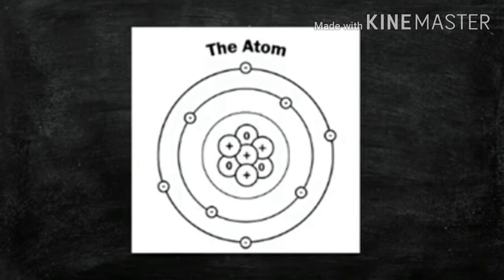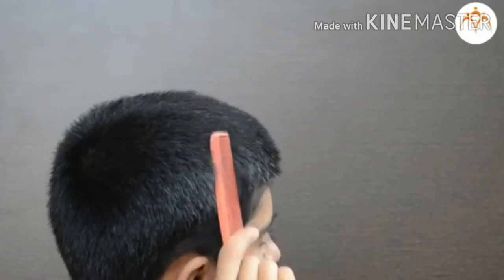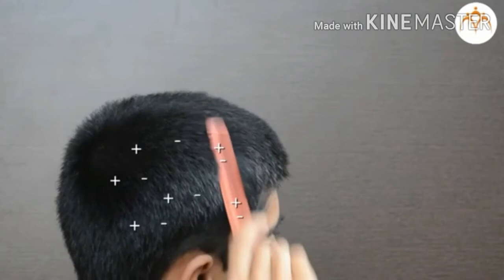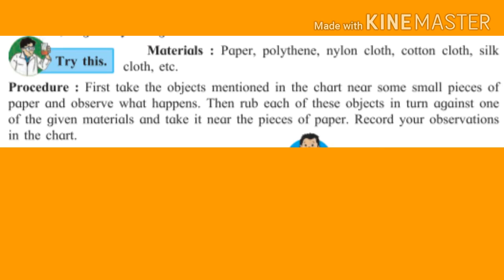Then how do objects become electrically charged? When certain objects are rubbed against each other, the negatively charged particles on one object go to the other object. The object to which they go becomes negatively charged, and the object from which the negatively charged particles go away becomes positively charged.